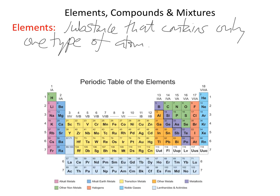This is the periodic table, which contains all the elements we know about today. Recently, elements 113, 115, 117, and 118 — which had three-letter placeholder symbols — have been given their official names and proper symbols, because they've only just been discovered.